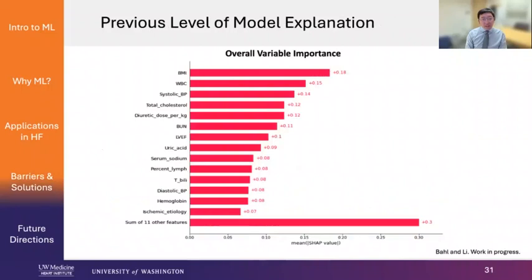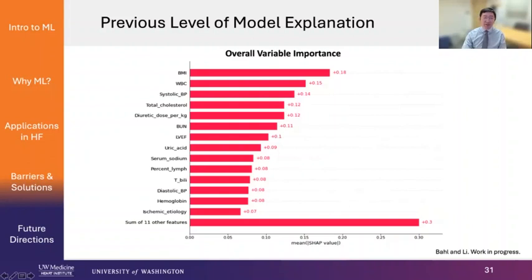The previous level of model explanation for machine learning basically gives you overall variable importance in the model. As you can see, BMI, white blood cell count, systolic blood pressure, diuretic dose — those are all among the top variables in terms of importance. But this is still very inadequate because it doesn't even tell you how each variable really makes predictions.